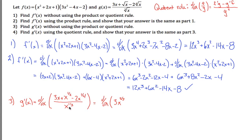So 3x divided by x to the 1/3 is 3x to the 2/3, since x to the 1 minus 1/3 gives x to the 2/3. When dividing powers, subtract the exponents. Then x to the 1/2 divided by x to the 1/3 is x to the 1/2 minus 1/3, and with a common denominator of 6, that's 3/6 minus 2/6 equals 1/6. For the last term, 1/4 minus 1/3 with a common denominator of 12 gives 3/12 minus 4/12, which is negative 1/12.